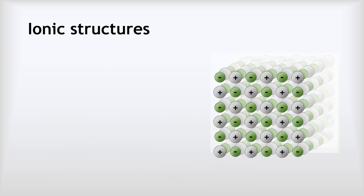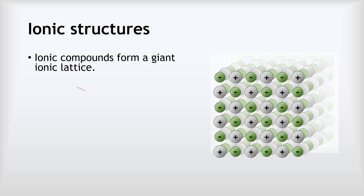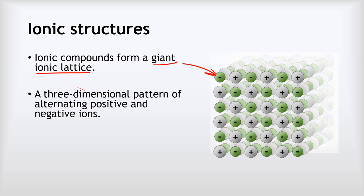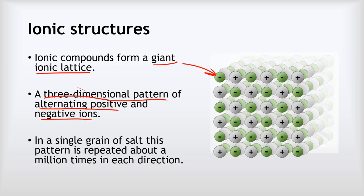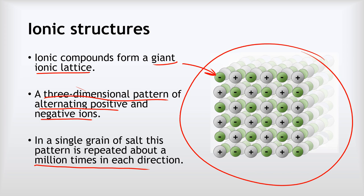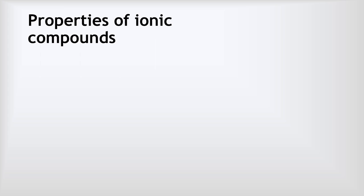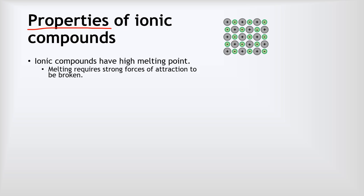To wrap this video up, let's look at the structure of ionic compounds. Ionic compounds form what we call a giant ionic lattice. This giant ionic lattice is a three-dimensional pattern of alternating positive and negative ions. In a single grain of salt, this pattern is repeated about a million times in each direction. What we see here is just a tiny fragment of this really big pattern. The giant ionic lattice structure of ionic compounds is what determines their properties.